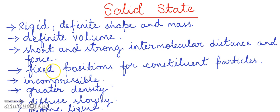Solids are almost incompressible. They have a greater density than liquids and gases. Solids diffuse very slowly as compared to liquids and gases. Most solids become liquid when they are heated, and this process is known as melting.